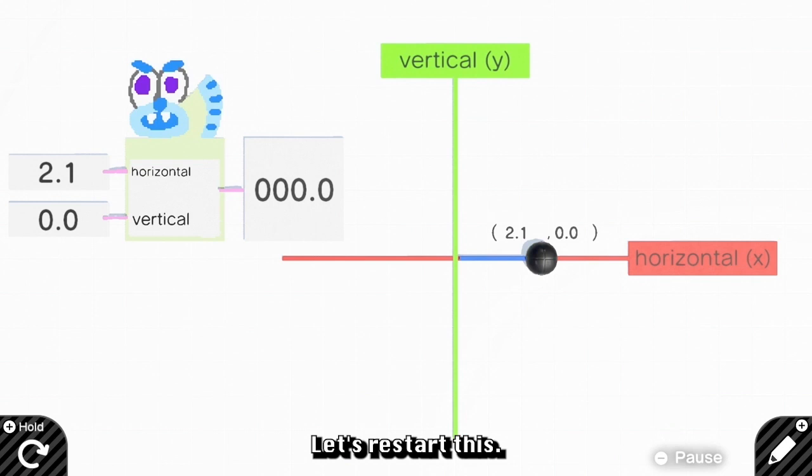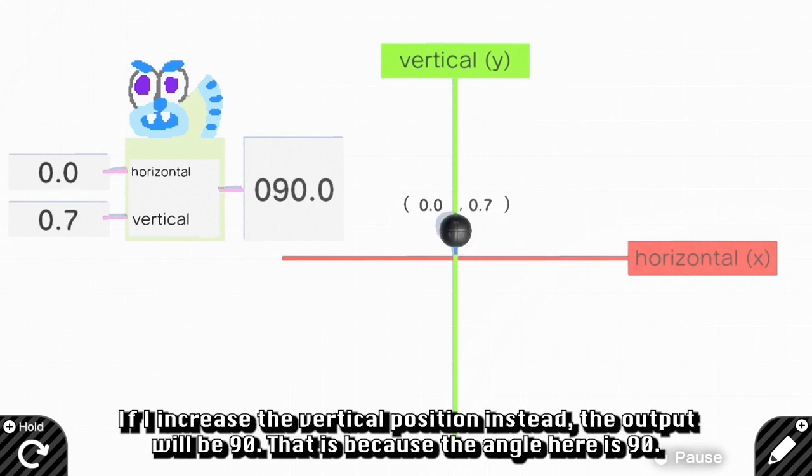Let's restart this. If I increase the value on vertical axis instead, the output will be 90. That is because the anchor here is 90.